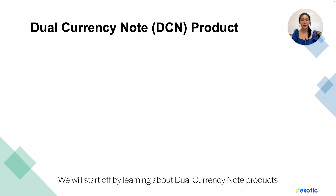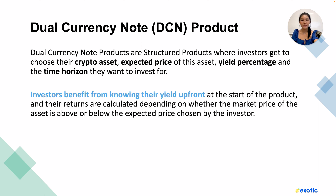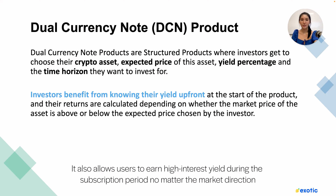Dual currency note products are structured products where investors get to choose their crypto asset, expected price of the asset, yield percentage, and the time horizon they want to invest for. Investors benefit from knowing their yield upfront at the start of the product, and their returns are calculated depending on whether the market price of the asset is above or below the expected price chosen by the investor. Dual investment provides users a chance to buy crypto at a lower price or sell crypto at a higher price in the future. It also allows users to earn high interest yield during the subscription period no matter the market direction.